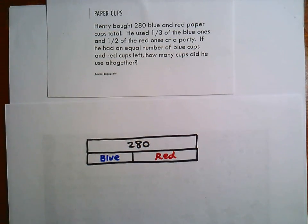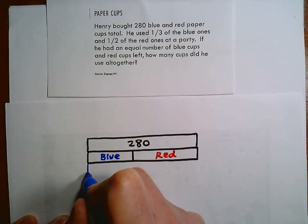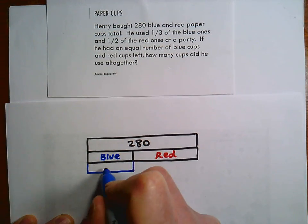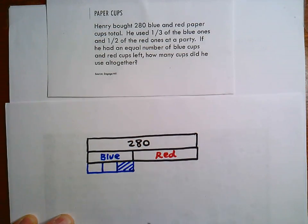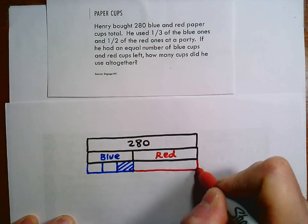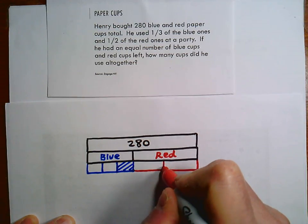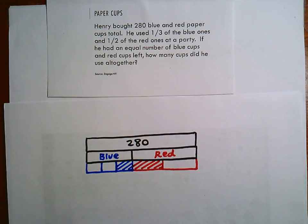I'm intentionally not drawing that line right in the middle, so it looks like you have a different number of cups. It says he used one-third of the blue ones, so I'm going to make thirds and shade one-third of the blue. Then for the red, he used half, so I'm going to draw the midpoint and shade those. The shaded ones are the cups used at the party.